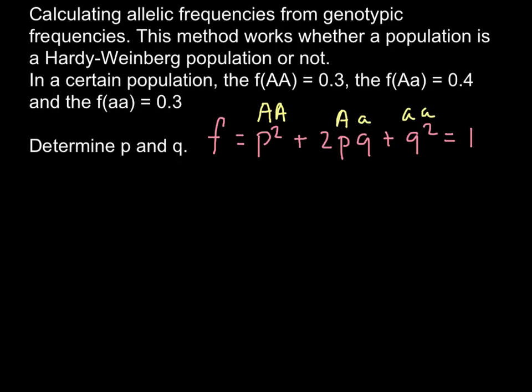q squared stands for homozygous recessive. We're given that the frequency of homozygous dominant is 0.3, heterozygote is 0.4, and homozygous recessive is 0.3. If we add all these numbers, we get 1, just like in our formula. Now we have to calculate the frequency of the p and q alleles. p plus q equals 1.